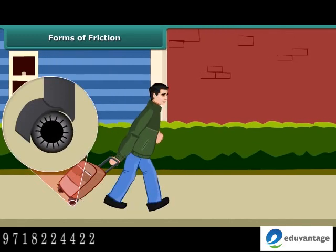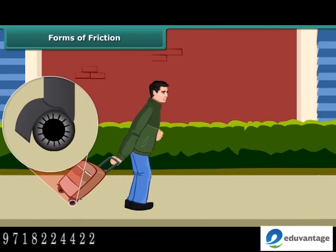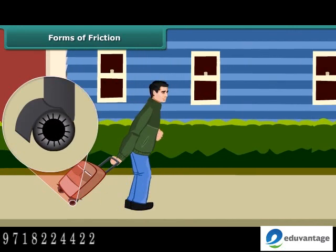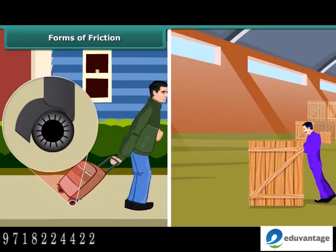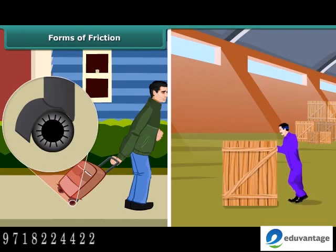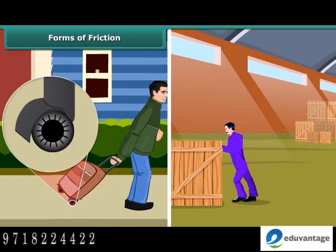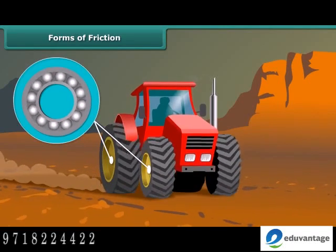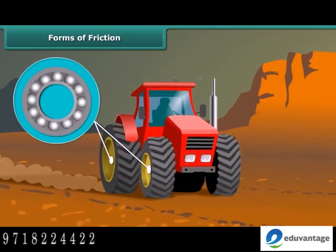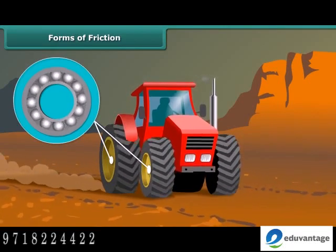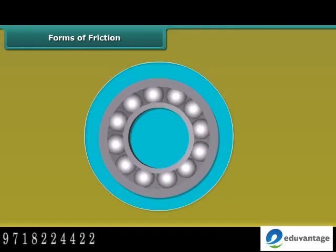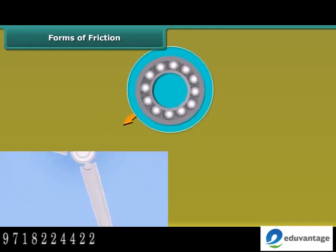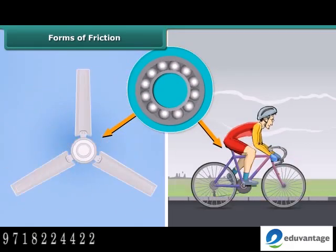The force of friction between the rollers on a body and the surface is called rolling friction. Rolling friction is much less than sliding friction. Since rolling friction is smaller than sliding friction, sliding is replaced in most machines by rolling, through the use of ball bearings. Common examples are ball bearings between hubs and the axles of ceiling fans and bicycles.